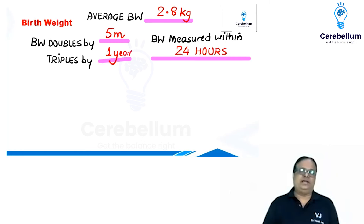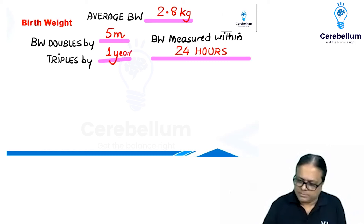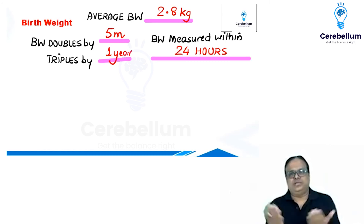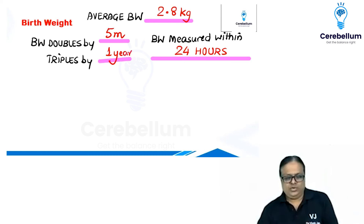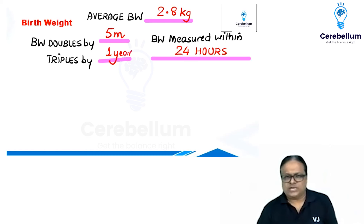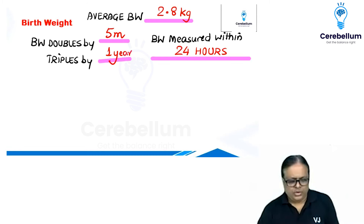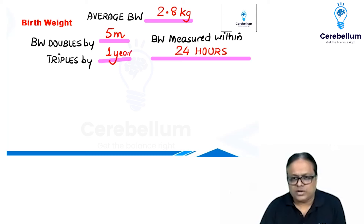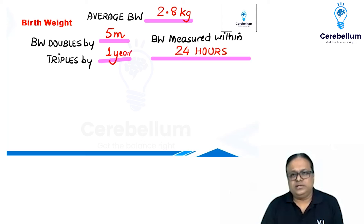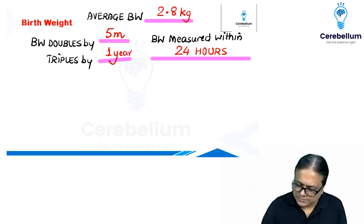Here is a technical question you need to understand. Suppose they make a lengthy question: you are a medical officer of a PHC and you come to know after two days that there was a delivery in your catchment area conducted by a trained dai who was not aware she had to record the birth weight. Now two days have passed — how will you measure the birth weight of the child when it was not recorded within 24 hours?